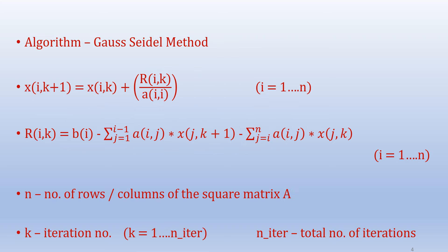The algorithm for Gauss-Seidel method is given below. X of i comma k plus 1 equals X of i comma k plus R of i comma k over A of i comma i.